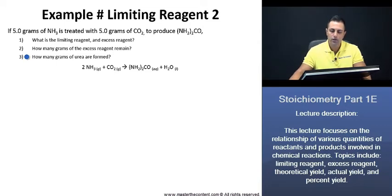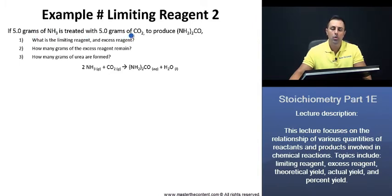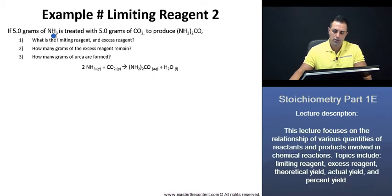To solve this problem, we'll begin with number 1. To find the limiting reagent and excess reagent, we can begin by taking the masses of the ammonia and the carbon dioxide and converting them into their moles, using their molar masses to find the amount of moles actually participating in our reaction. From there, we can find the limiting reagent and the excess reagent.